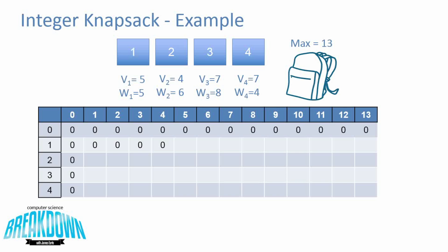At the next space where we can actually fit item 1, we put it in — it's the only item we're considering. In this version of the knapsack problem we're not allowing duplicate items, so once we've taken an item, we can't take it again. So now we get a value of 5, because we've taken item 1 and filled our backpack. For the rest of this row, we're only considering the first item and there are no more items to take, so we fill in the rest of the row with 5s.